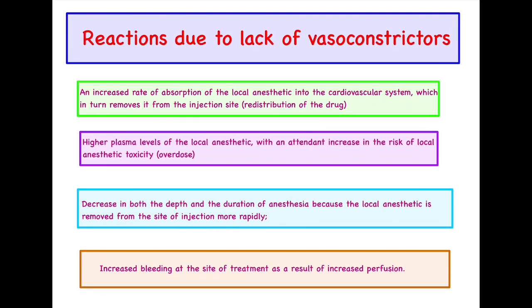The first consequence is redistribution of the drug. Because of the inherent vasodilation occurring, there is an increased rate of absorption of the local anesthesia into the cardiovascular system, which in turn removes it from the injection site. Without a vasoconstrictor, the anesthesia — instead of being deposited at the required site — flows towards the cardiovascular system. This is known as redistribution of the drug. The second consequence is that because of the high plasma levels, there is an increased risk of local anesthetic toxicity, that is, overdose.